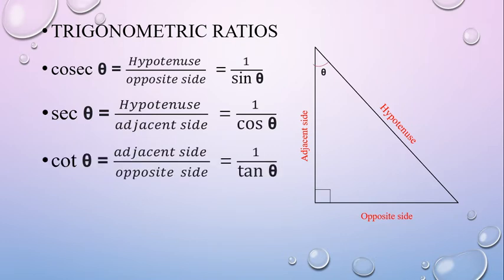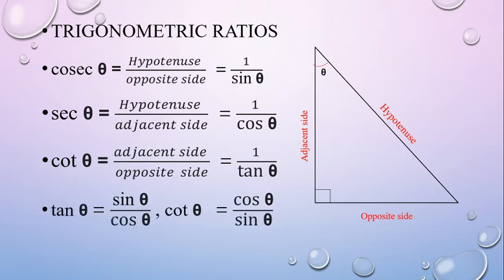Cos theta is 1 by tan theta, that is adjacent side by opposite side. Then tan theta is the opposite side by adjacent side. Cot theta is the adjacent side by opposite side.